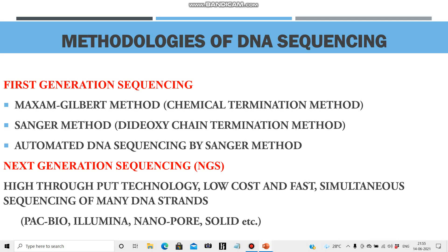The methodologies of DNA sequencing are: first generation sequencing — the chemical termination method or Maxim-Gilbert method, the dideoxy chain termination method or Sanger method, and automated DNA sequencing by Sanger method. Next generation sequencing uses low-cost and fast simultaneous sequencing of many DNA strands, e.g. PacBio, Illumina, Nanopore, Solid, etc.